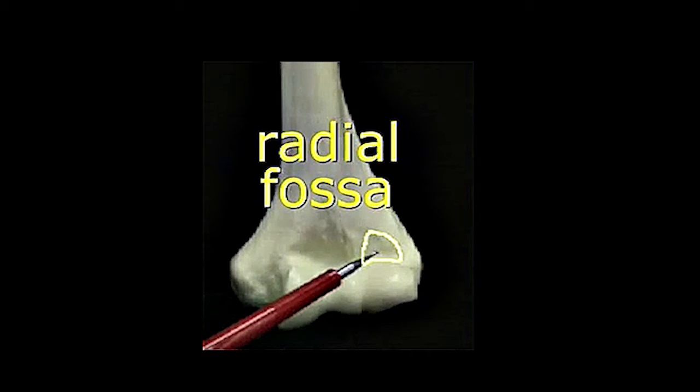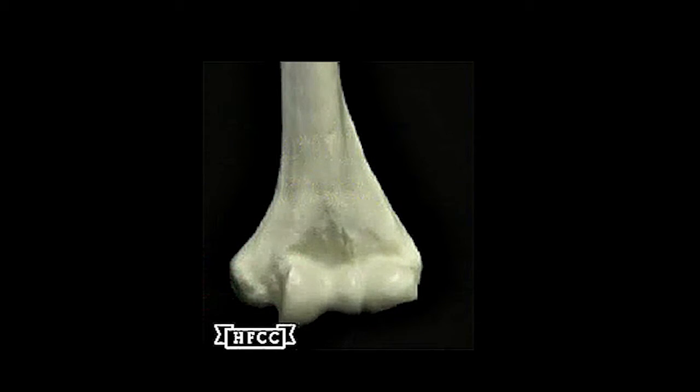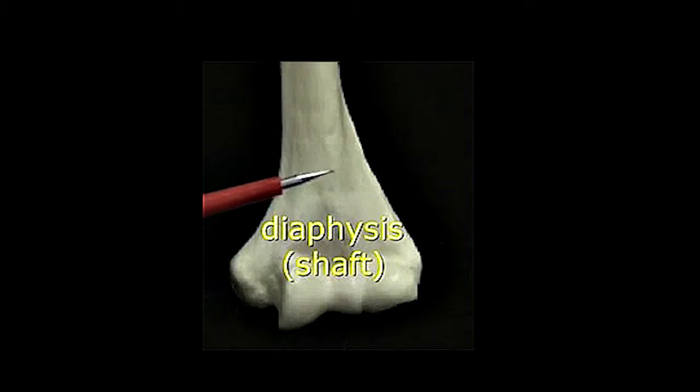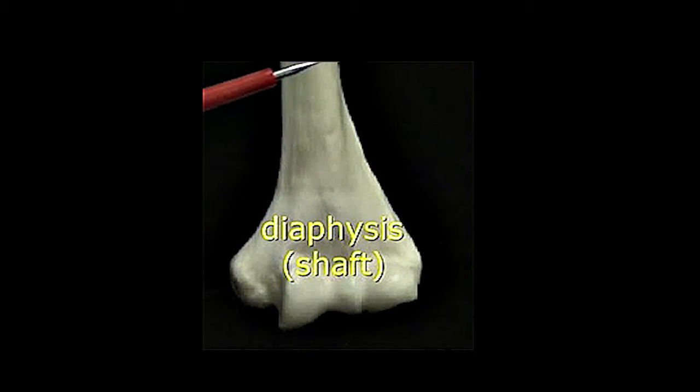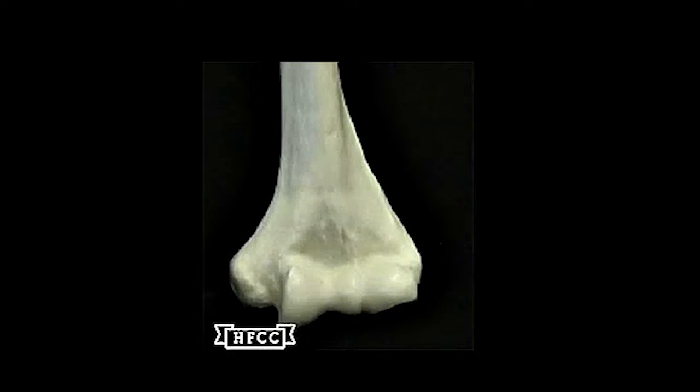Whereas the previous fossa would allow the ulnar bone to move into that area. And then this starts the diaphysis, or the shaft of the bone. Long bones have a diaphysis, or shaft.